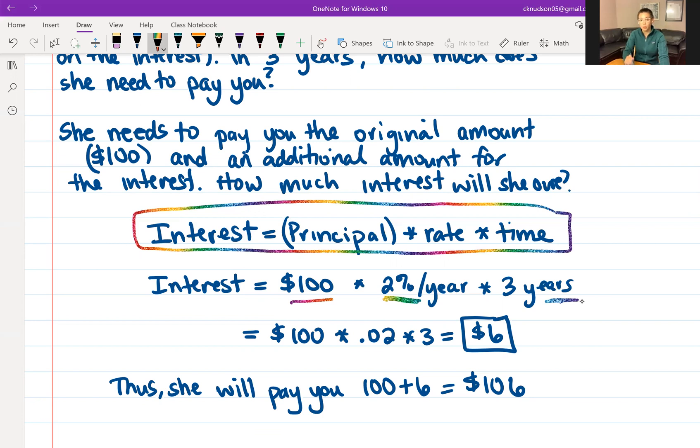The way that we rewrite 2% is 0.02. So we've got $100 times 0.02 times three years, and this gives us $6. So this is the amount that she will pay you in interest. The original amount that she's borrowing, $100, plus the $6 that she's paying in interest, means that in three years, she will pay you back $106.